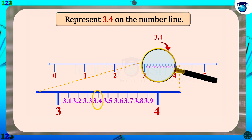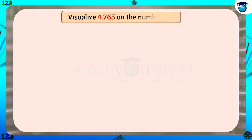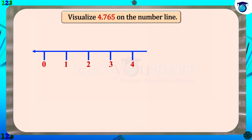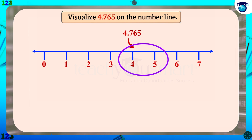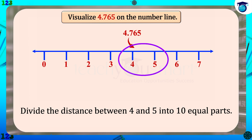It is not easy to visualize the decimal expansions having two or more digits after the decimal point. Let's see how we can use a magnifying glass for the visualization of such numbers. For example, visualizing 4.765 on the number line. Clearly we can say that the number 4.765 lies between 4 and 5, so first of all divide the distance between 4 and 5 into 10 equal parts.